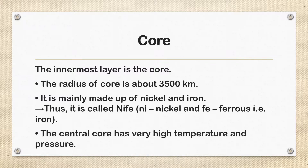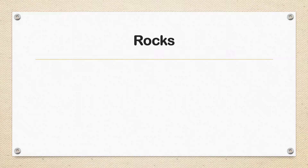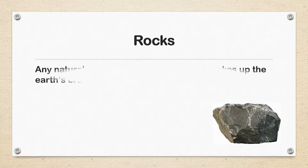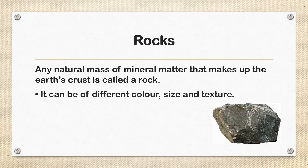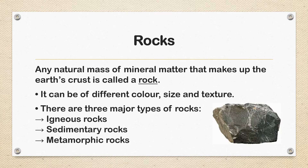The central core has very high temperature and pressure. Going towards the rocks — any natural mass of mineral matter that makes up the Earth's crust is called a rock. It can be of different color, size, and texture. There are mainly three major types of rocks: igneous rocks, sedimentary rocks, and metamorphic rocks.